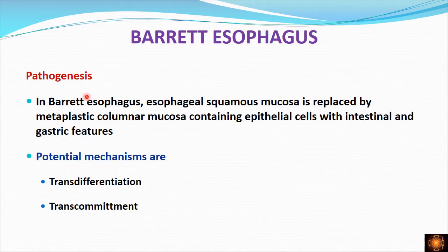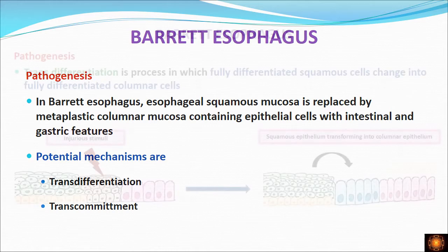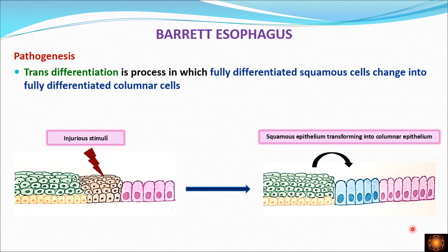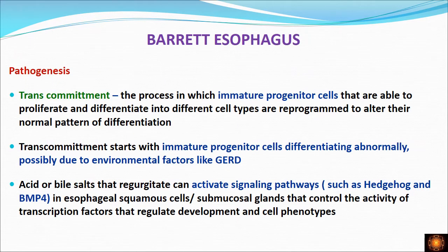Coming to the pathogenesis — the mechanism of change from squamous epithelium to columnar epithelium — the two potential mechanisms described are transdifferentiation and transcommitment. Transdifferentiation is the process in which fully differentiated squamous cells change into fully differentiated columnar cells. When there is an injury stimulus, this squamous epithelium changes into columnar epithelium — fully differentiated cells, not immature cells.